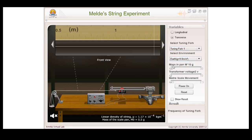The mass added to the pan can be varied from 10 grams to 30 grams. I set our initial mass added to the pan as 10 grams. Now the transformer voltage is set to 8 volts. We have this slider for meter scale adjustment, for adjusting the scale position, used for measuring length of the loops formed. Let us turn on the power supply.